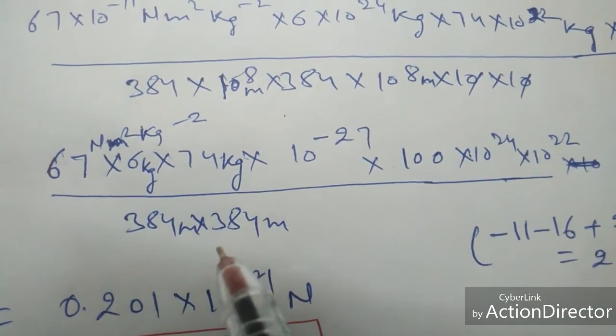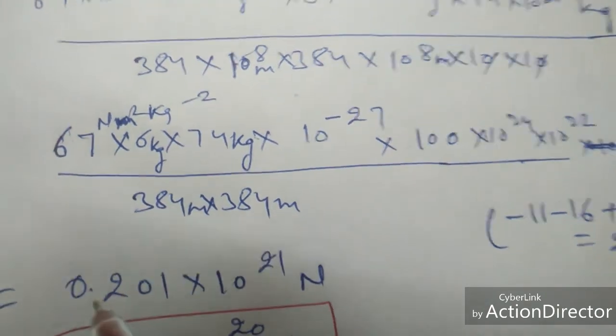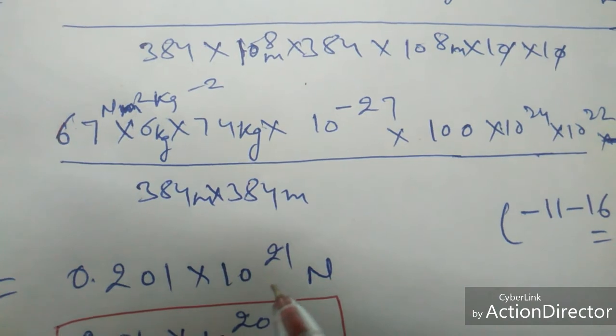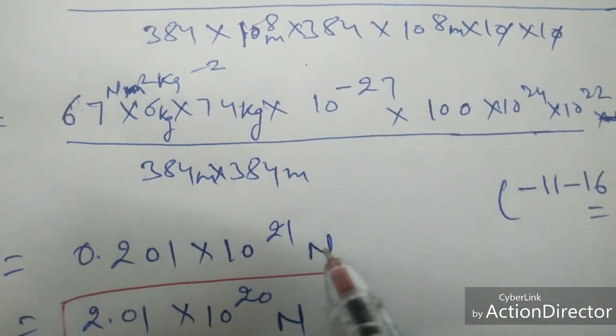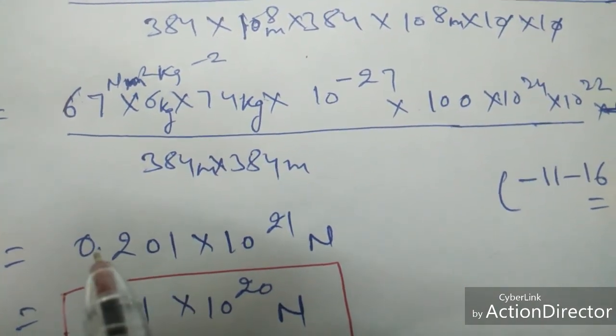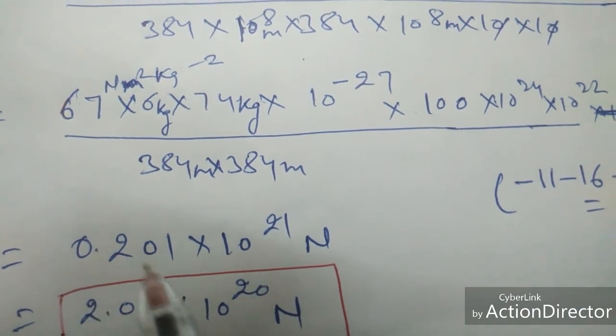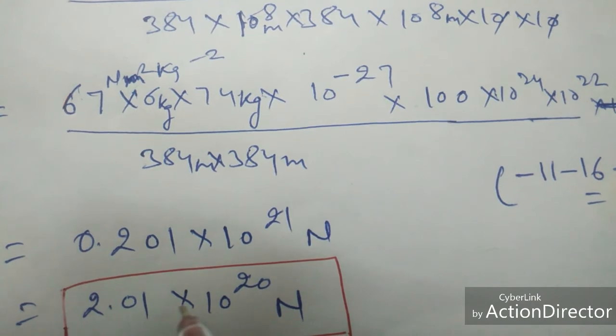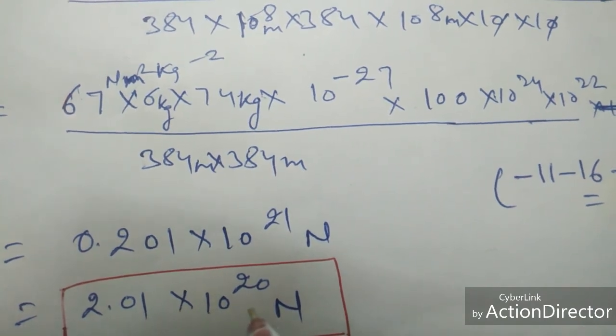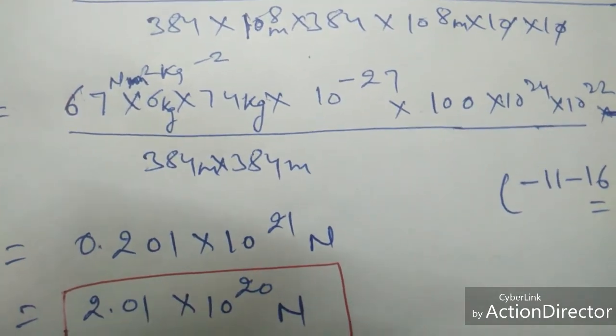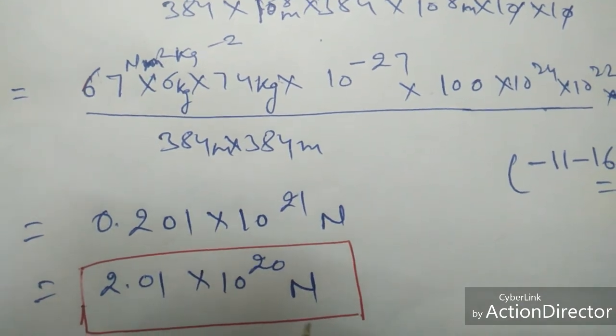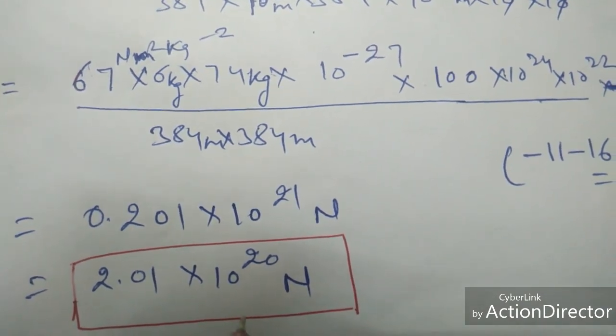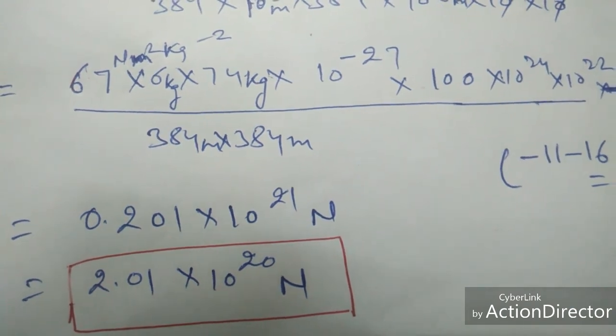it will come out to be 0.201 × 10²¹ newtons. If we have to apply the decimal from here to here, one zero will be removed. It will be 2.01 × 10²⁰ newtons. Hence, the force exerted by Earth on the Moon is 2.01 × 10²⁰ newtons.